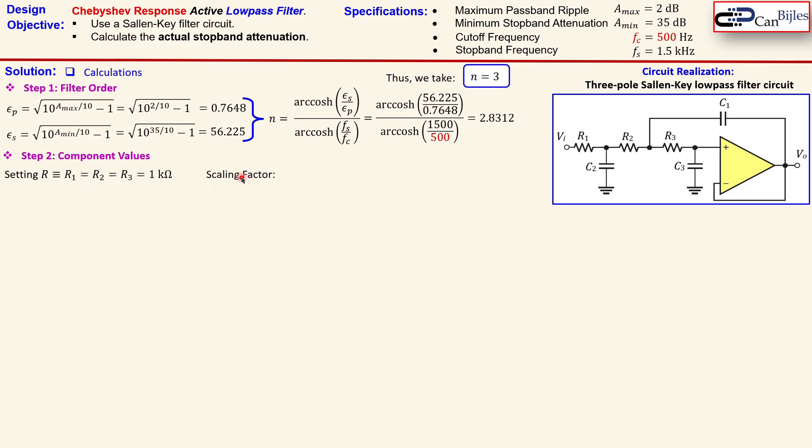Then we can go to the scaling factor, which is defined here as capital letter C is one over that R and omega c. And omega c is 2 pi times this cutoff frequency, fc.